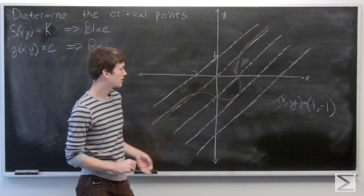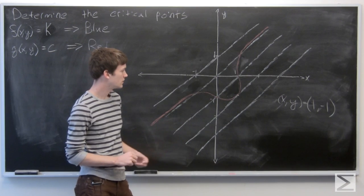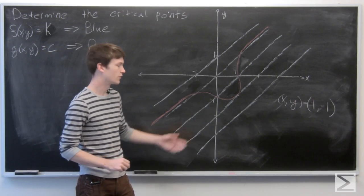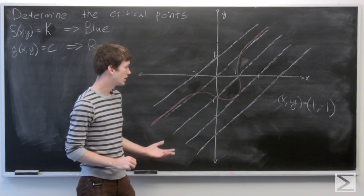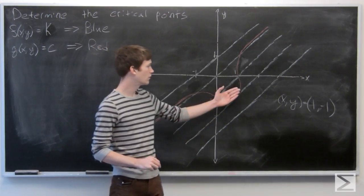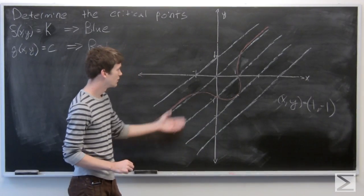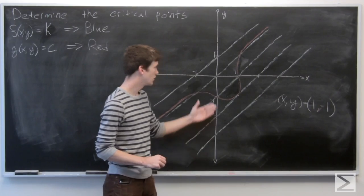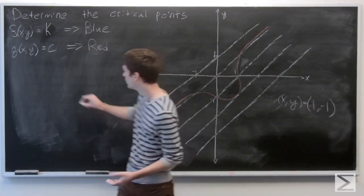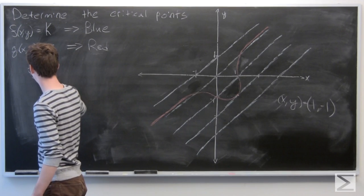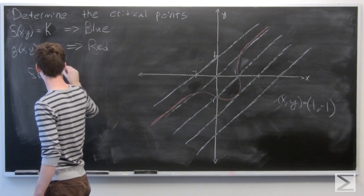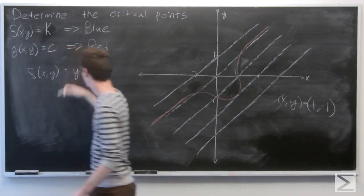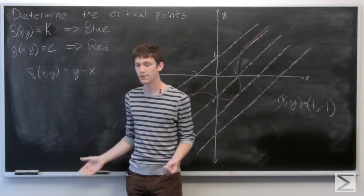And an interesting thing about this problem is you can actually sort of determine what our function f(x,y) is, because all of the level curves appear to be just linear lines with slope 1. So we see that we should have f(x,y) equals y minus x.